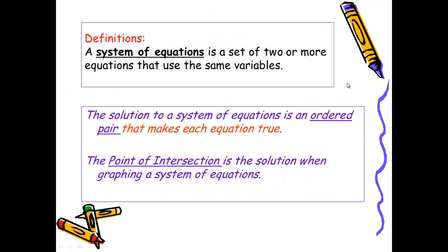There are several definitions with which we need to be familiar. A system of equations is a set of two or more equations that use the same variables. The solution to a system of equations is an ordered pair that makes each equation true. And the point of intersection is the solution when graphing a system of equations.